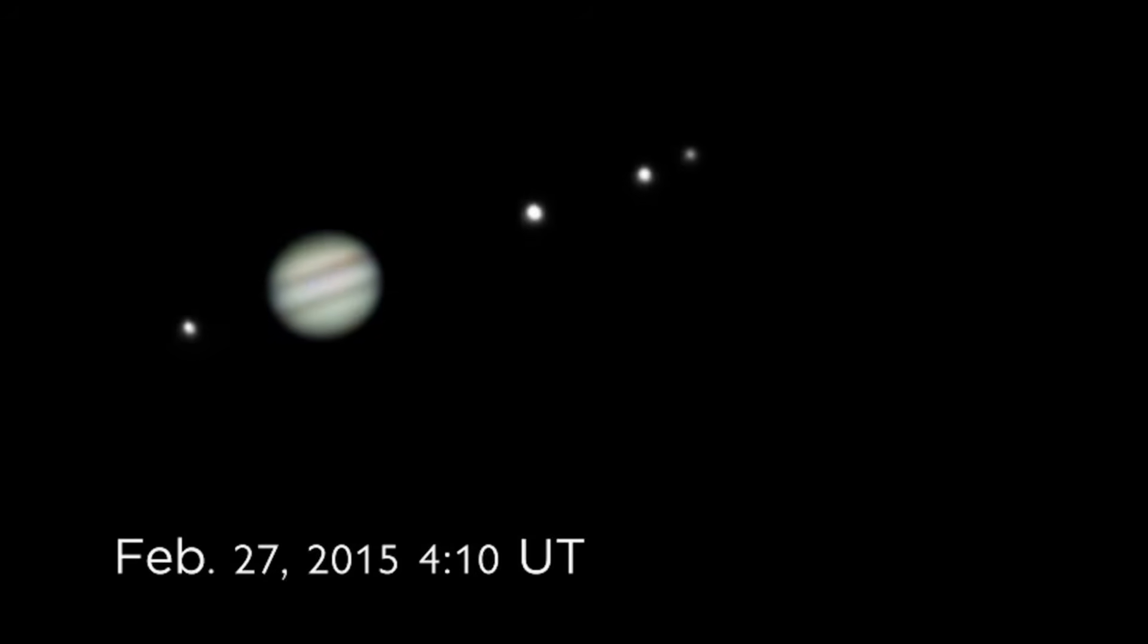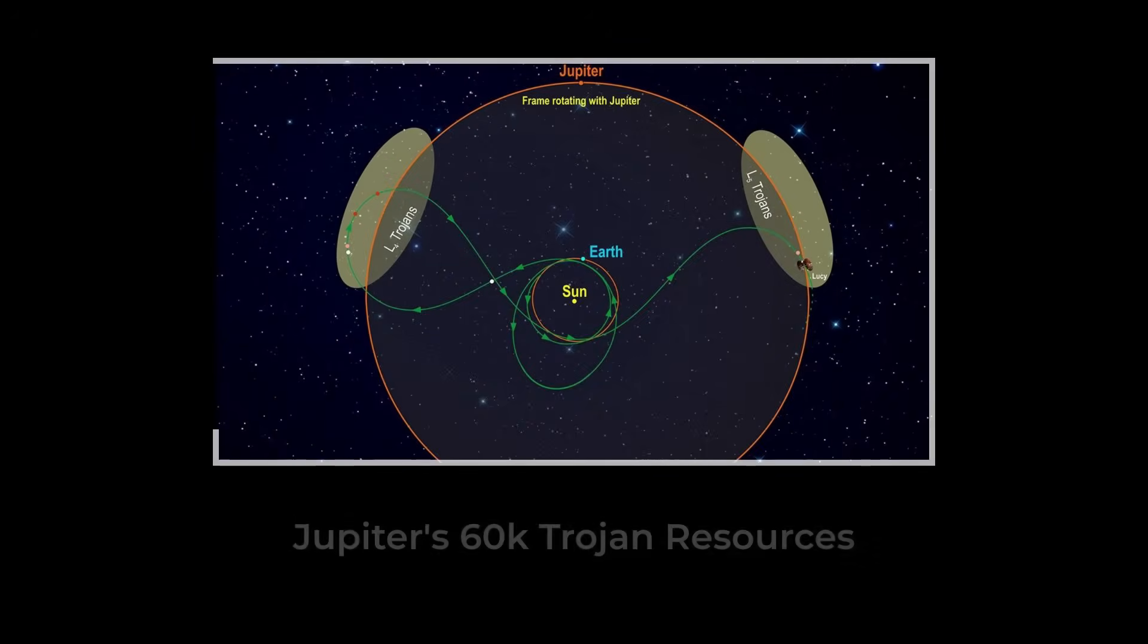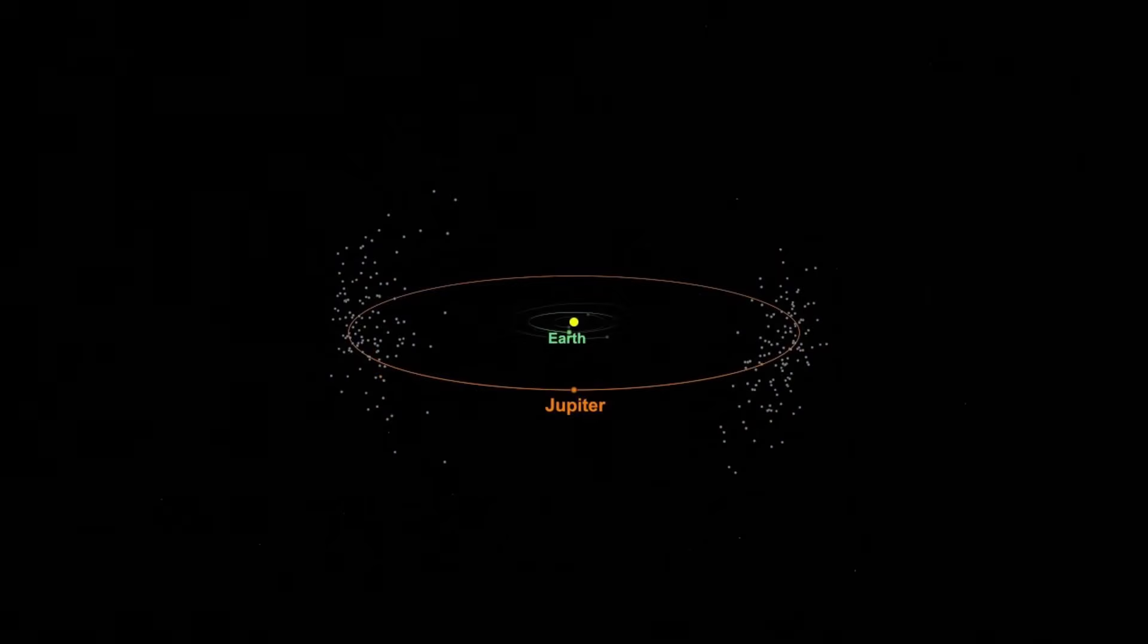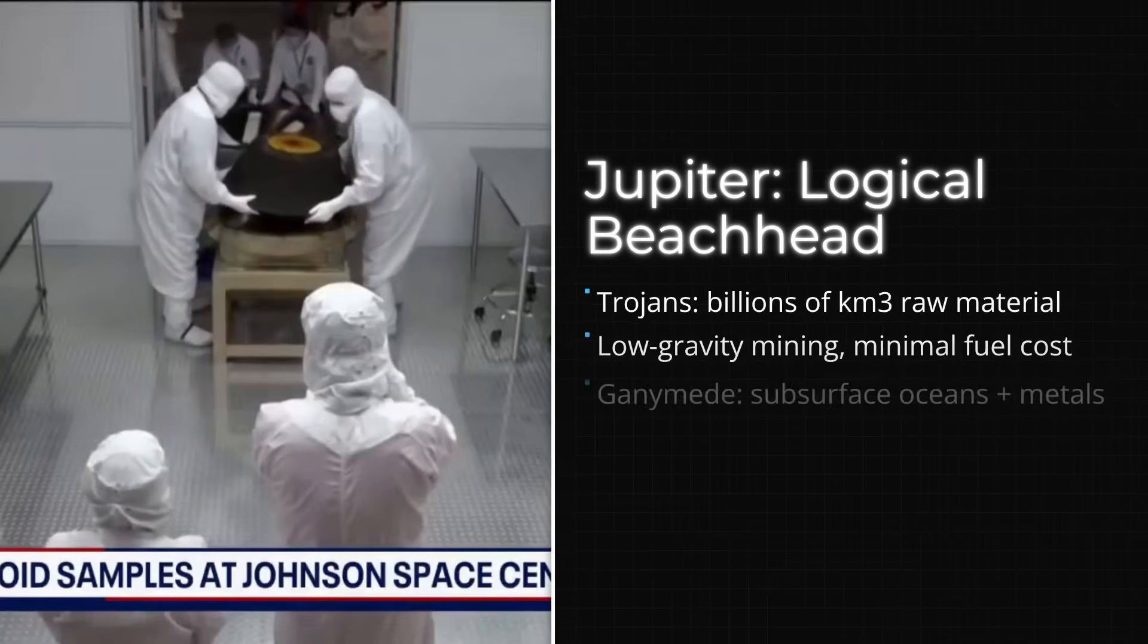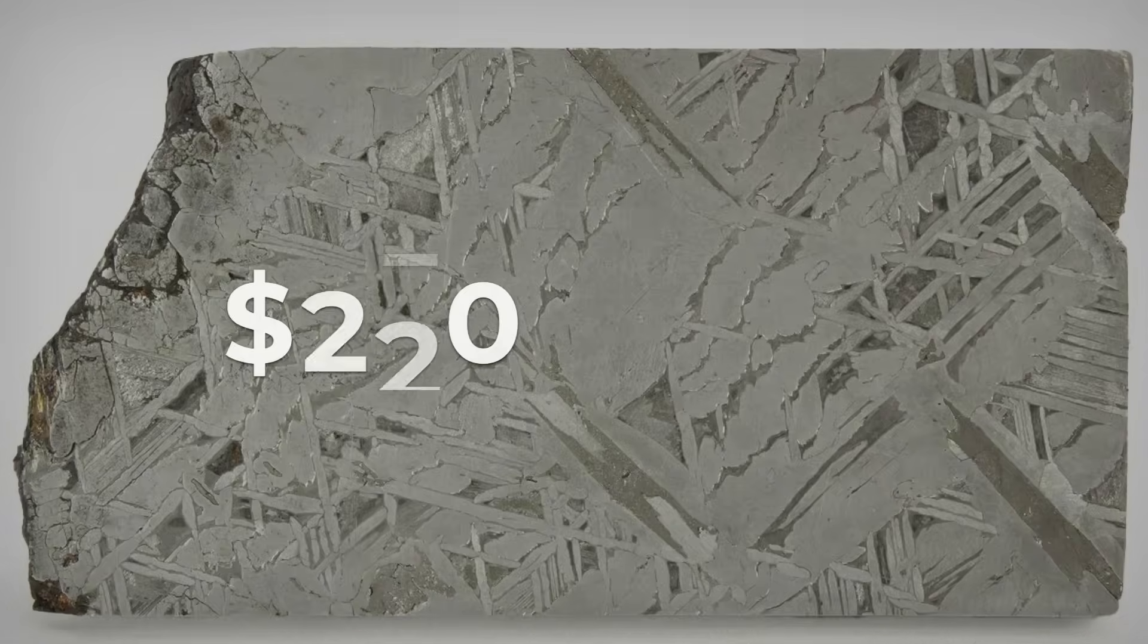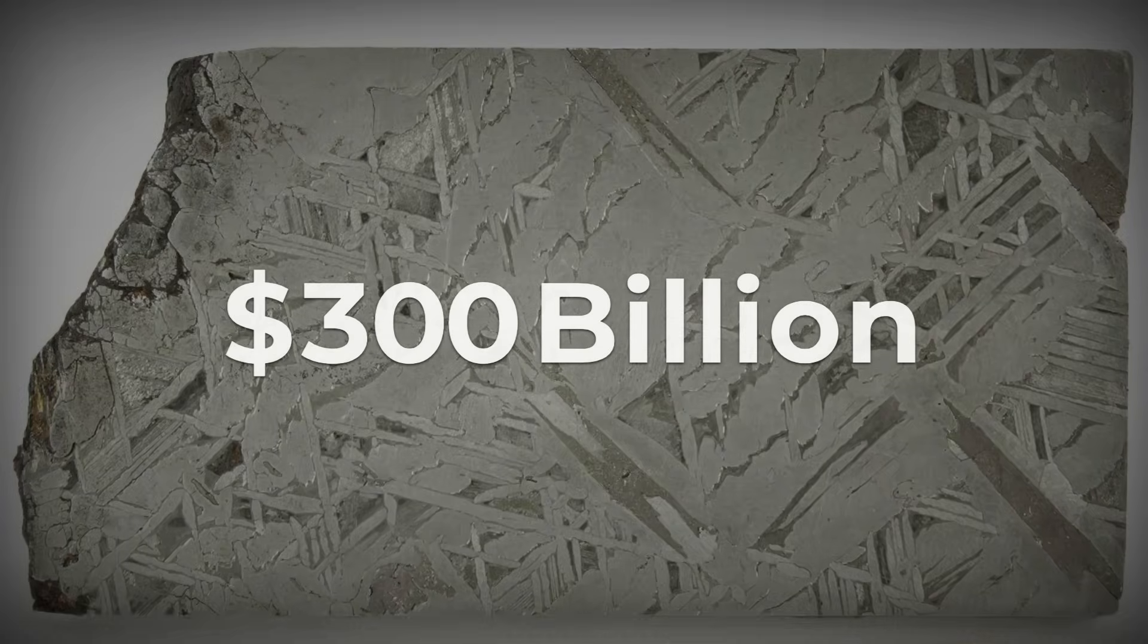But the strategic value of Jupiter's system doesn't end there. Locked in the planet's orbit are the Trojan asteroids, tens of thousands of bodies clustered at stable points ahead of and behind Jupiter. These swarms contain a mix of carbon-rich, silicate, and metallic objects, with billions of tons of iron and nickel scattered among them.